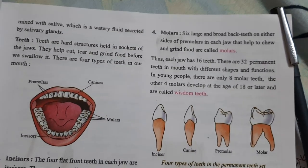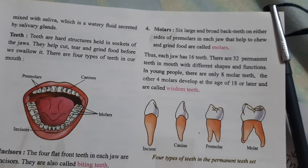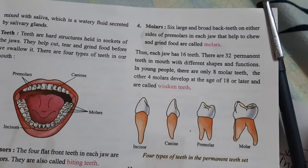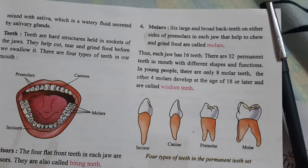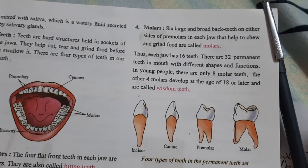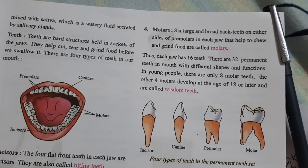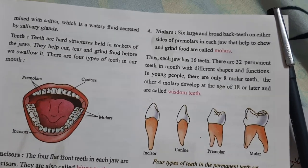In young people there are only 28 molar teeth. The other four molars develop at the age of 18 or later and are called wisdom teeth.